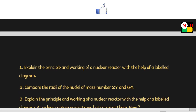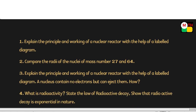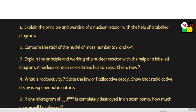Second, compare the radii of the nuclei with mass numbers 27 and 64, and mass number 2 nucleus — compare the radii. Third, explain the principle and working of a nuclear reactor with the help of a labeled diagram. This is the same question — maybe different to these other questions.